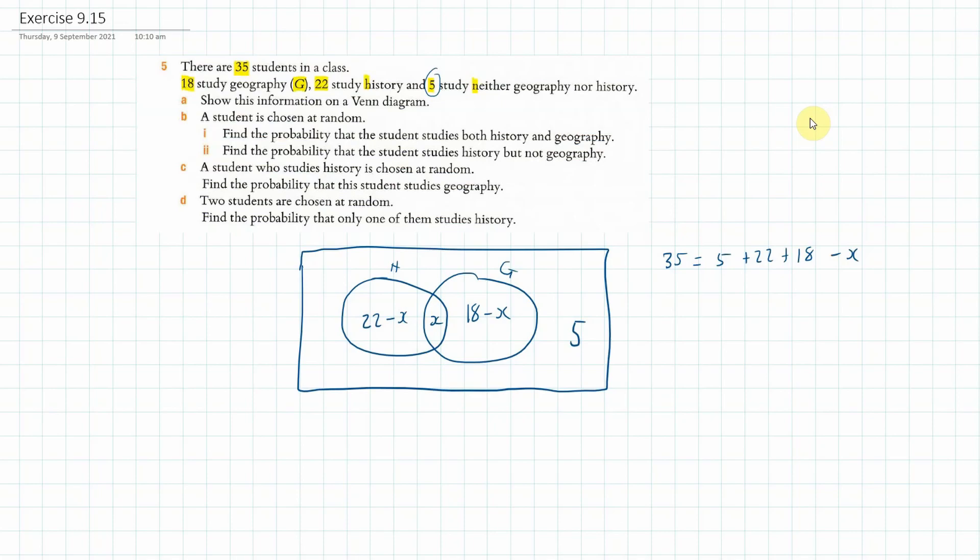Okay, so we can bring the x across to the left hand side. And then the 35 across to the right hand side. So we've got 22 plus 18 plus 5, which is 45, take away 35. So x is equal to 10.